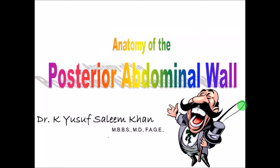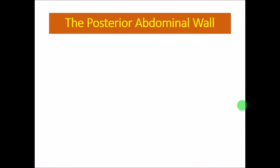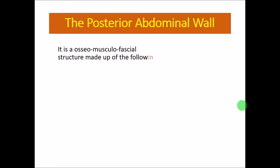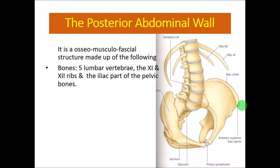In this lecture we will discuss the anatomy of the posterior abdominal wall. The posterior abdominal wall is classified as an osteomusculofascial structure — osteo meaning the bony structures, so there are bones within the posterior abdominal wall.